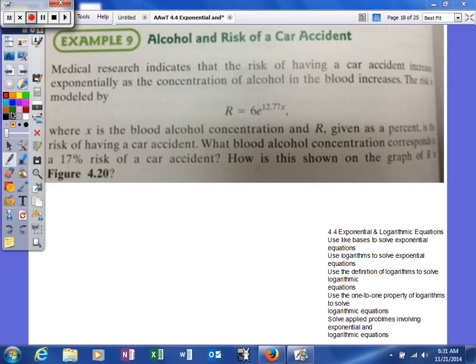We're trying to figure out what it is for a 17% chance. Since it's talking about a percent as a percent, we can just use 17 instead of writing the decimal for that. So we have 17 = 6e^(12.77x). That's how our problem sets up, and then all we have to do is solve for x.